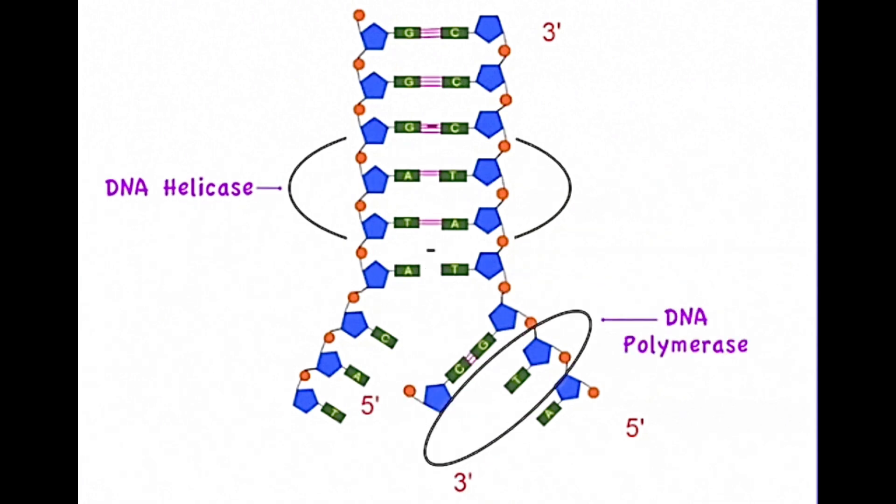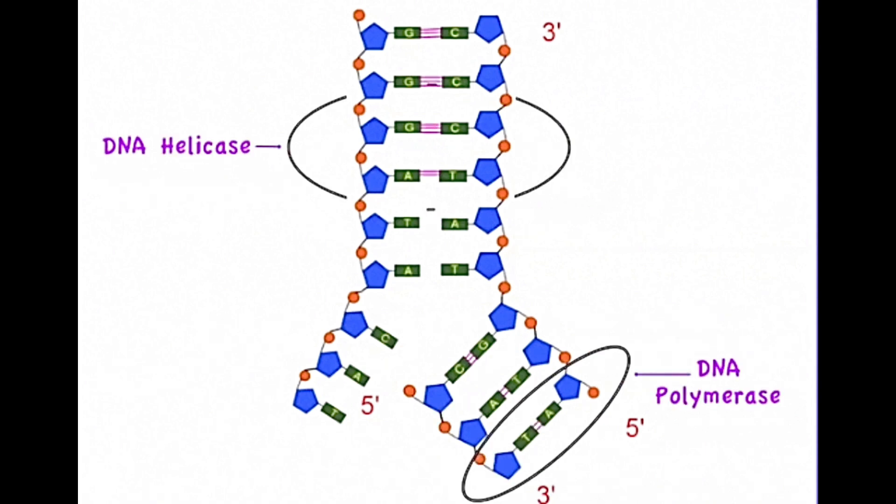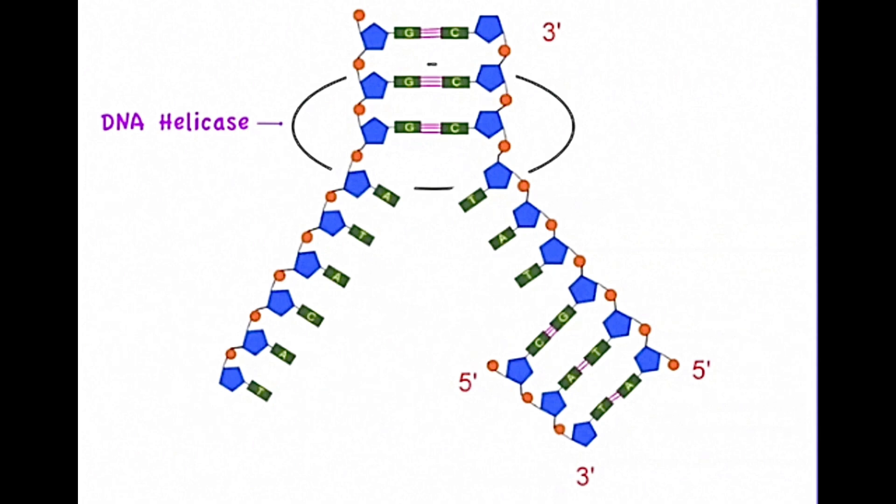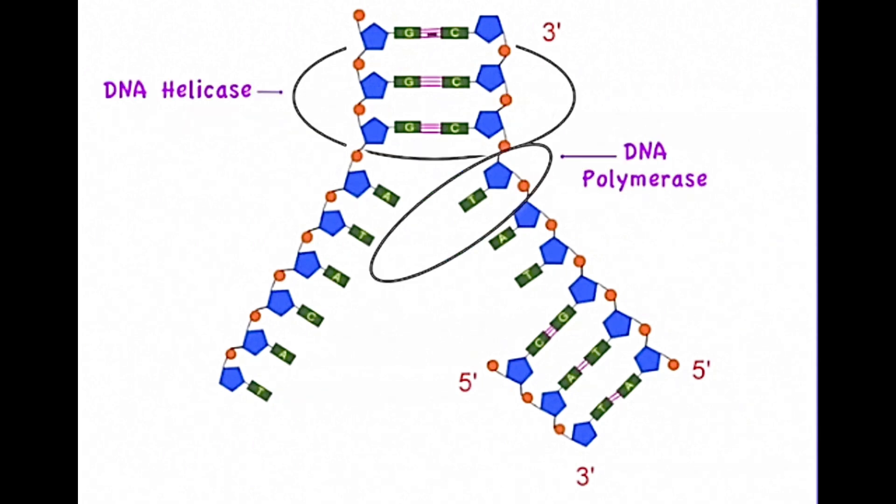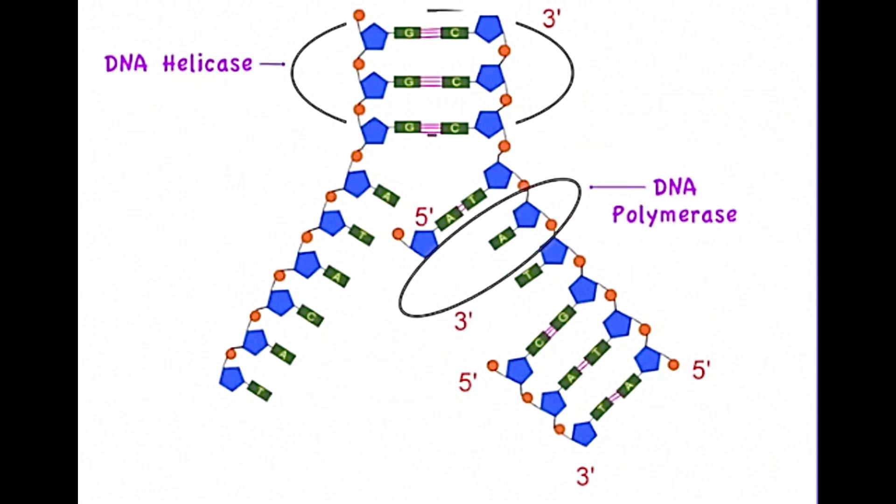However, because of the anti-parallel nature of the original DNA strand, DNA polymerase has to work in the opposite direction on the lagging strand. Recall that we just mentioned that DNA polymerase was only able to add a nucleotide to the 3' end of the previous nucleotide.